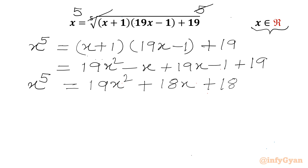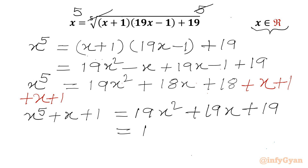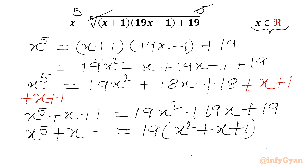LHS is x power 5. Now I will consider one manipulation step: add (x+1) to both sides. So our equation becomes x⁵ + x + 1 on the left. The right-hand side becomes 19x² + 19x + 19. Taking 19 as common gives 19(x² + x + 1). So x² + x + 1 equals x⁵ + x + 1.